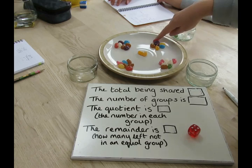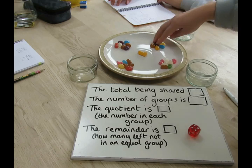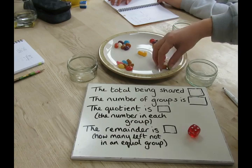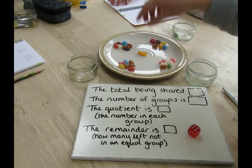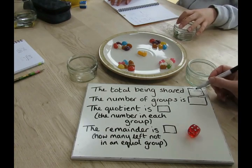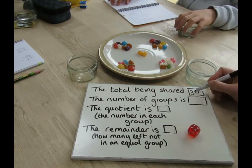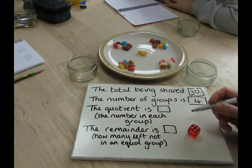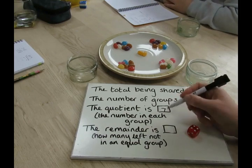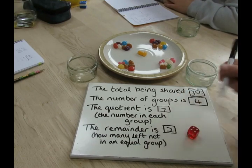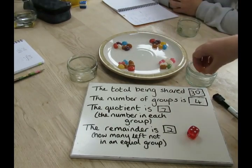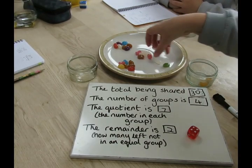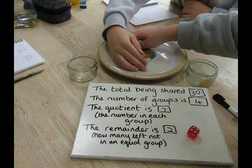So have I got an equal number in each group? I've got seven in that one, seven in that one, seven in that one, and seven in that one. I've got a remainder of two. So I shared 30 into four equal groups, seven in each group, and I have two as a remainder — so I'm going to win those two. How many have we got left for our next roll now? 28.